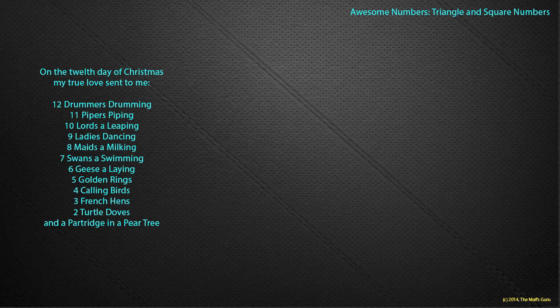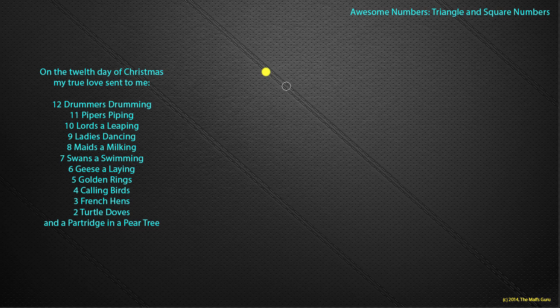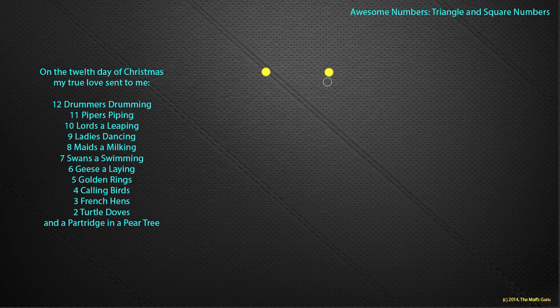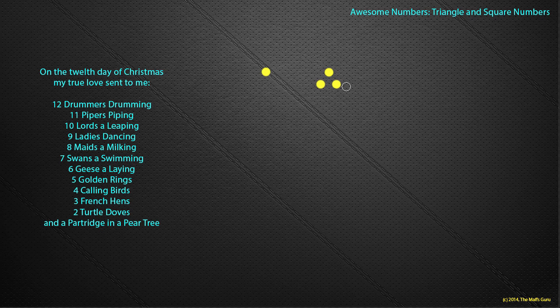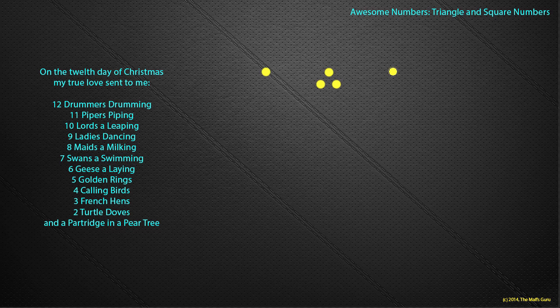On the first day of Christmas my true love sent to me a partridge in a pear tree - there's that partridge in that pear tree again. On the second day of Christmas my true love sent to me two turtle doves and a partridge in a pear tree - an additional two presents. On the third day of Christmas my true love sent to me three French hens, two turtle doves and a partridge in a pear tree. So I've got the partridge first, there's the two turtle doves, and there now are my three French hens.